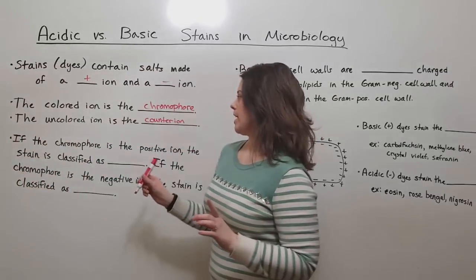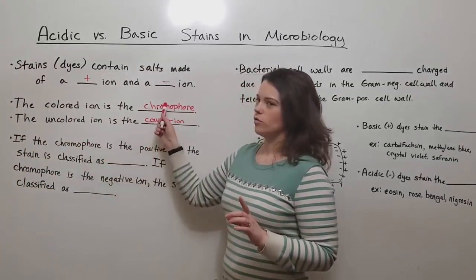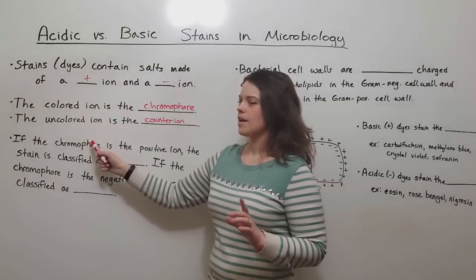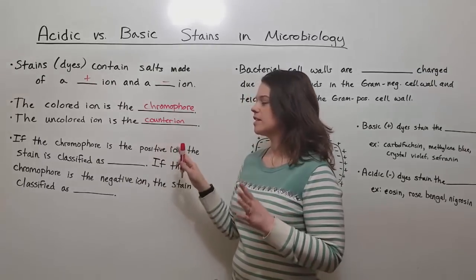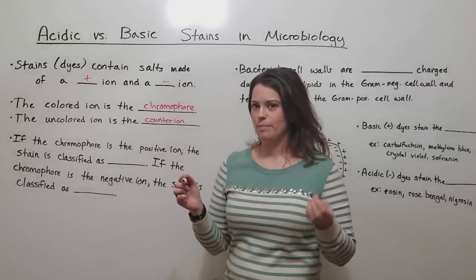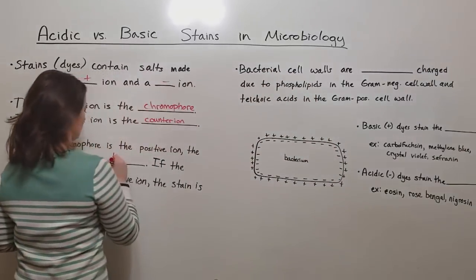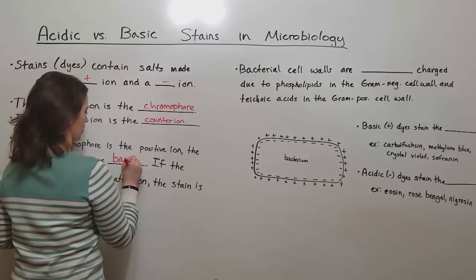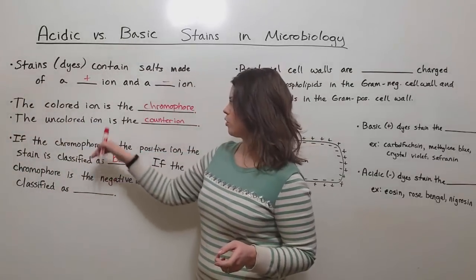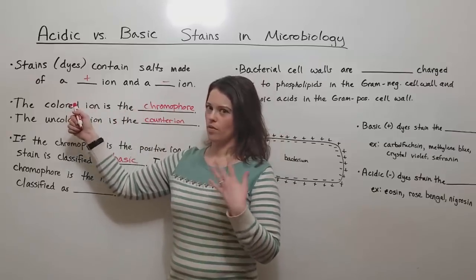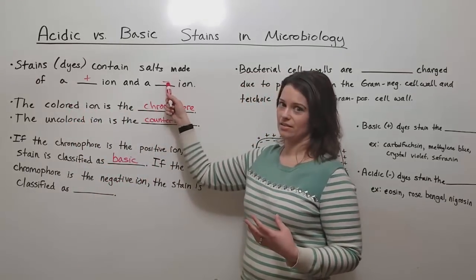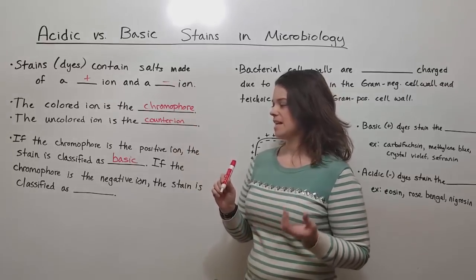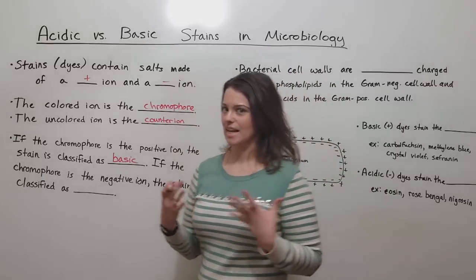Now here's where it gets a little bit tricky. If the chromophore is the positive ion, then the stain is classified as a basic stain. On the other hand, if the chromophore is the negative ion, then the stain is classified as an acidic stain.